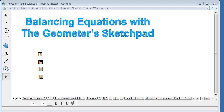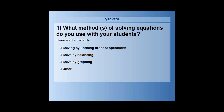I apologize to Mac users — the polls get cut off, so I'll read the question as well. You'll see a poll; simply choose your answer and hit submit. Here is the first poll question: What methods of solving equations do you use with your students? In this one you can choose more than one possible answer.